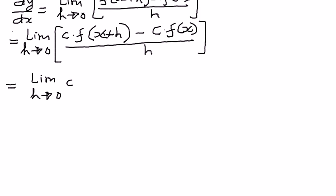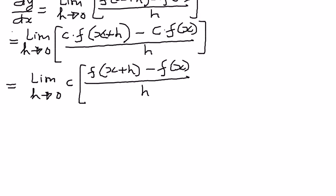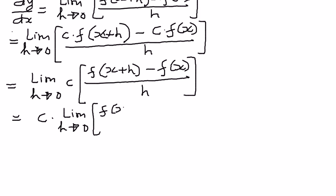I'm going to take c outside of the brackets and write this as c times the quantity f of x plus h minus f of x, all divided by h. Since we are multiplying a constant to a function, we can pull the constant all the way outside, giving us c times the limit as h approaches 0 of f of x plus h minus f of x, divided by h.